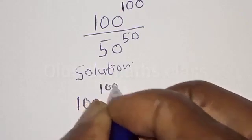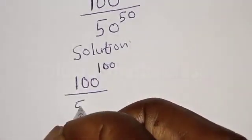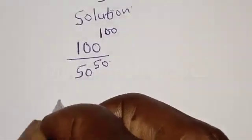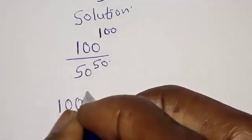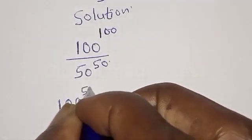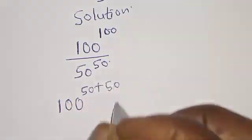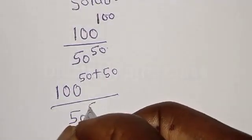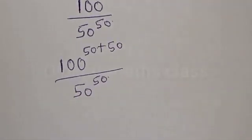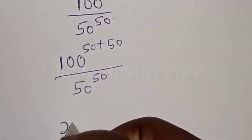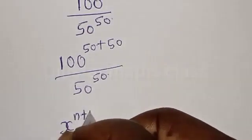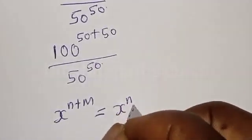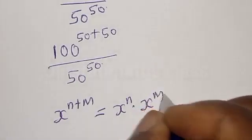Solution: we have 100 raised to power 100 over 50 raised to power 50. This can be expressed as 100 raised to power 50 plus 50 over 50 raised to power 50. Recall that if you have S raised to power N plus M, that is the same thing as S raised to power N multiplied by S raised to power M.